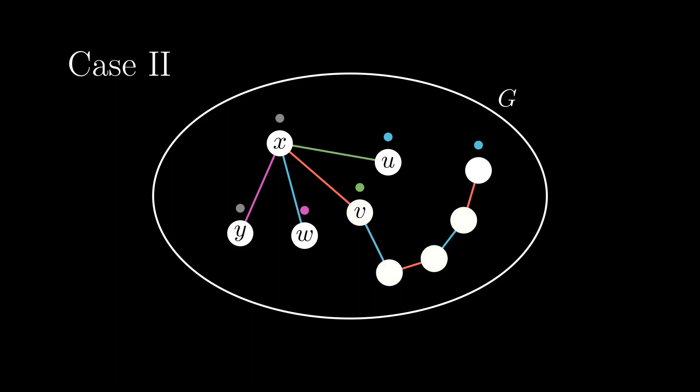Combining the lower and upper bound, we see that no matter what, we can always color any graph using either Δ(G) or Δ(G) + 1 colors.